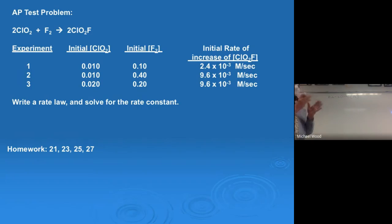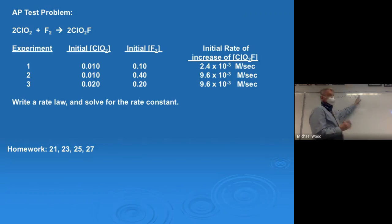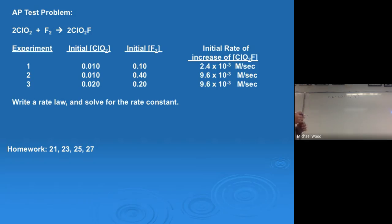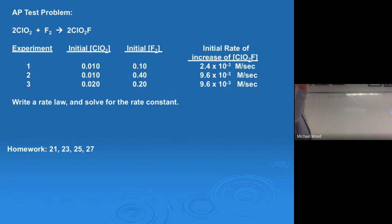What I want to do is figure out F2 first using the ratio method, and then when I figure out x I'm going to have to include F2. So I'm going to figure out y first, using experiments one and two. If you have a problem like this, figure out one of the exponents first — that's what I'm doing. I can eliminate ClO2 because its concentration doesn't change, and I'll put the larger number on top — experiment two over experiment one.